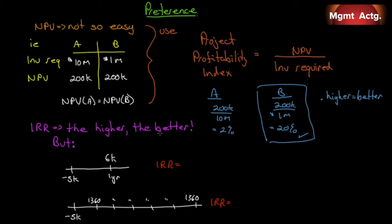We can also look at the internal rate of return as a standalone analysis. Let's take two projects — both require an investment of $5,000. The first returns $6,000 in one year; its IRR is 20%. The second requires $5,000 but returns $1,360 every year for six years; its IRR is 16%. With IRR, the higher the better. If our weighted average cost of capital is 15%, we would accept both projects. But if we had to break a tie, we'd say the first one makes more sense.